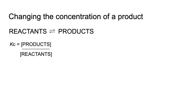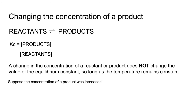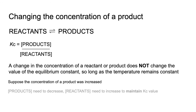Similarly, if the concentration of a product is increased, the numerator of the Kc expression increases, so Kc would increase if the equilibrium didn't shift. Since the temperature hasn't changed, Kc must stay constant, so the equilibrium shifts to lower the product concentration and raise the reactant concentration — meaning the equilibrium moves to the left.